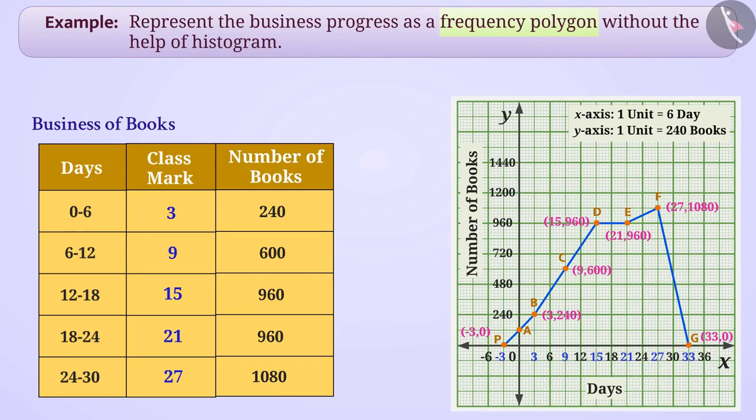Sometimes, imaginary class intervals do not exist, as the number of days here cannot be less than 0. Therefore, the class interval minus 6 to 0 does not exist. In such cases, we extend only that much part of line segment which is on the right of the y-axis. Like here, we will draw AB and ignore PA. Then, we will connect y-axis and intersection point of this line segment to origin O. Like here, we connect A with O.